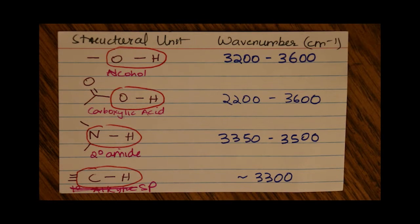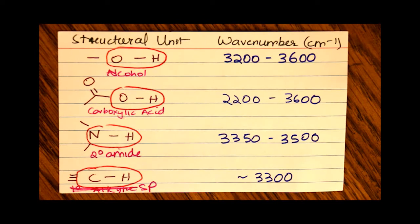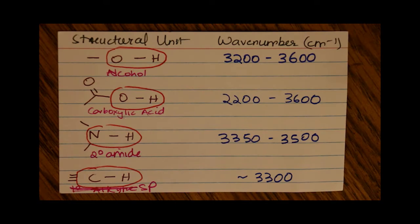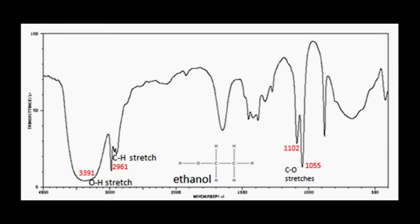In IR analysis, it's important to know the ranges for where the peaks show up for the corresponding structural units. For example, in an alcohol, the range is between 3200 and 3600 inverse centimeters.